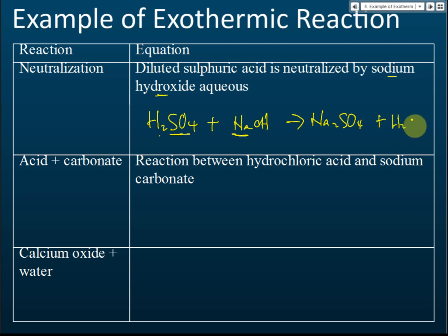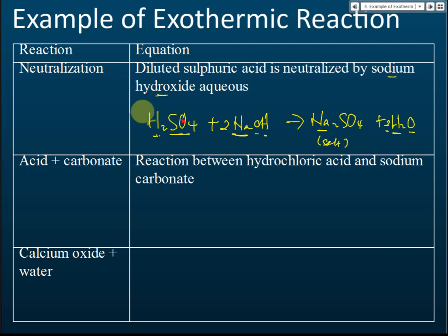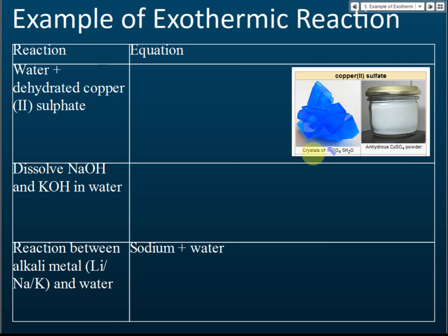For neutralization, the products are a salt and water, and heat is released. The equation H₂SO₄ + NaOH → Na₂SO₄ + H₂O is not balanced initially. We balance it by placing a coefficient of 2 before NaOH, giving four hydrogens on the left, and a coefficient of 2 before H₂O on the right. Now the equation is balanced: H₂SO₄ + 2NaOH → Na₂SO₄ + 2H₂O.